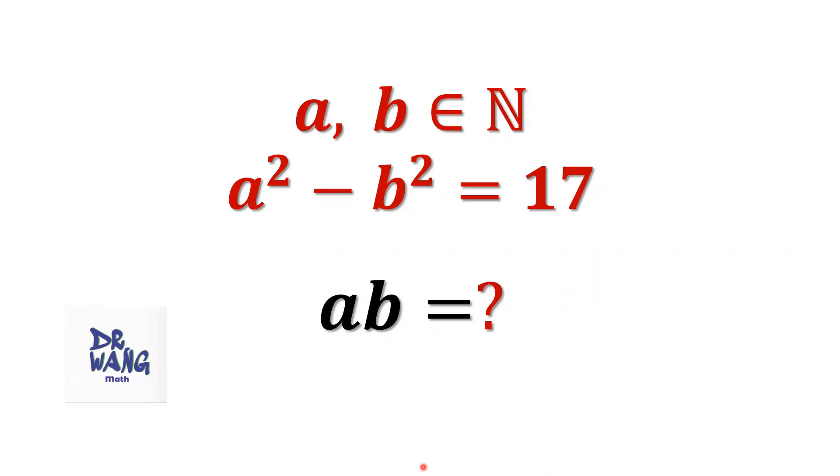Hello everyone, I'm Dr. Wang. Here is the question. If A and B are positive integers, A squared minus B squared equals 17, what is the value of A times B?